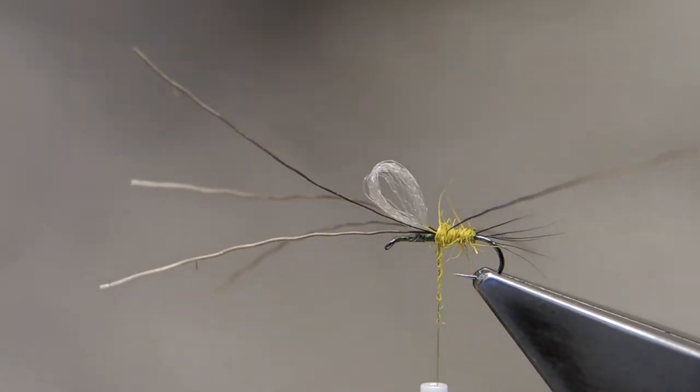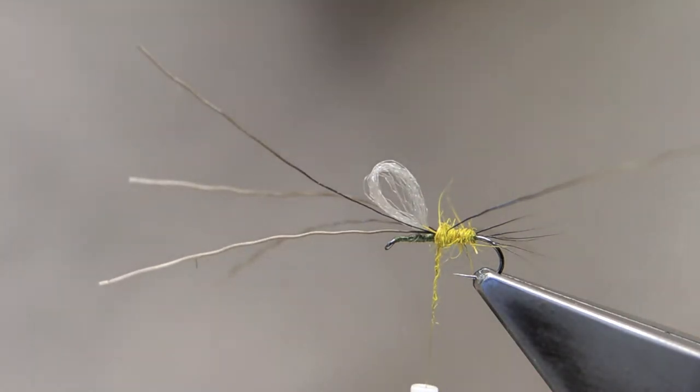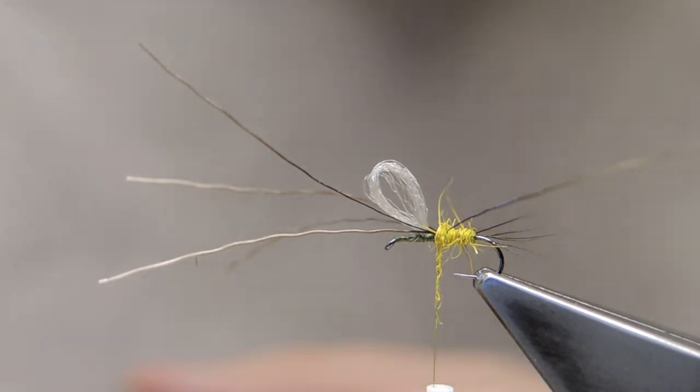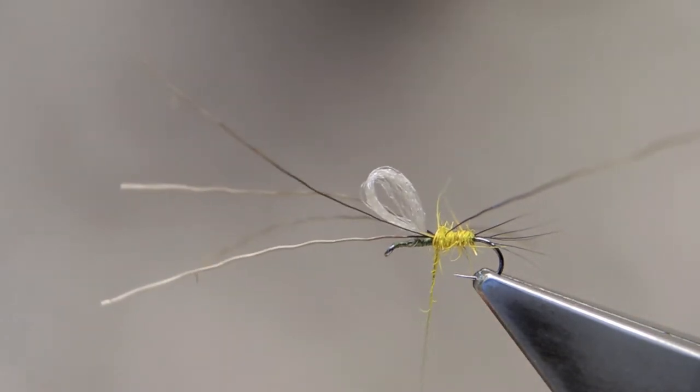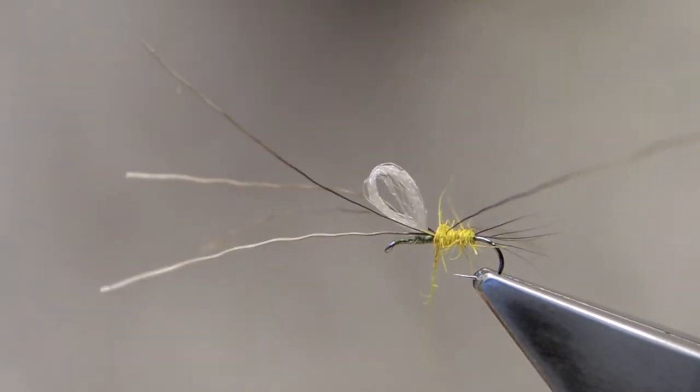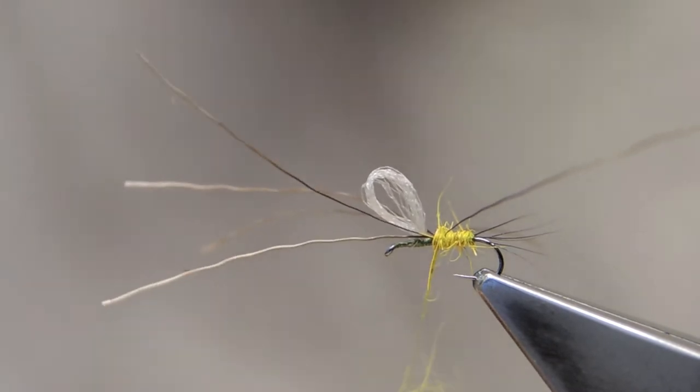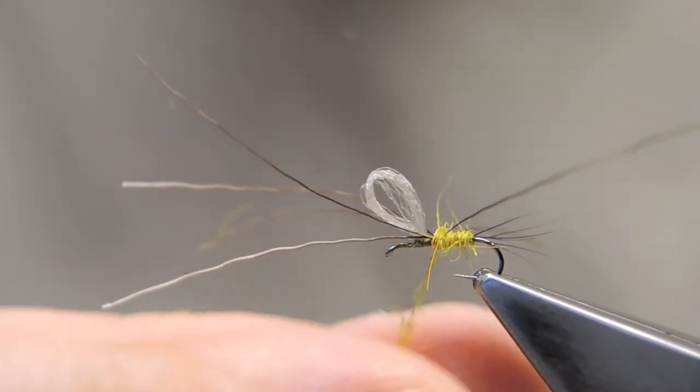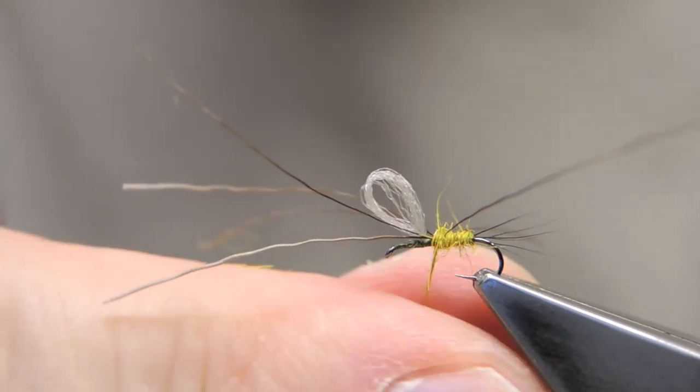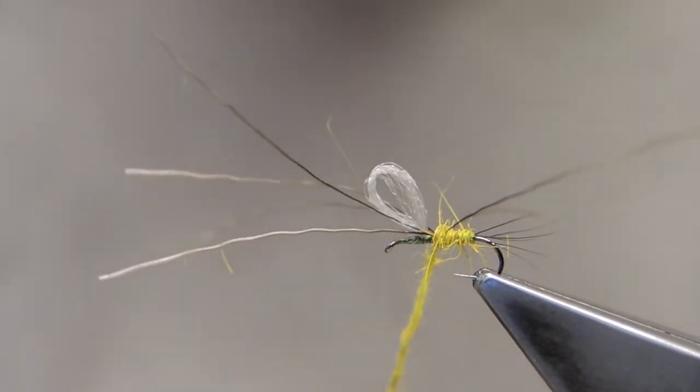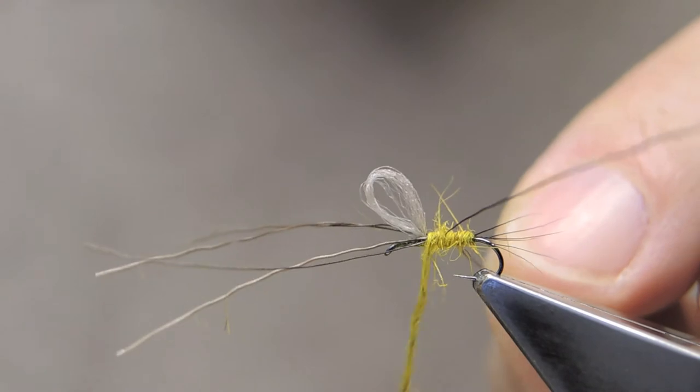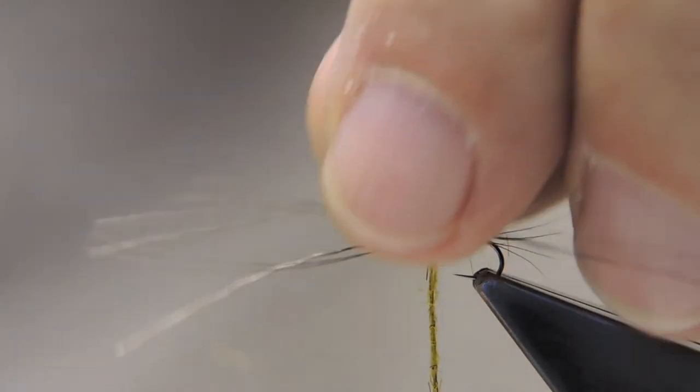The other two go on either side of the wing. One pair on one side, one on the other. Just add some more dubbing to start forming the thorax portion of the fly, up to the base of the wing.